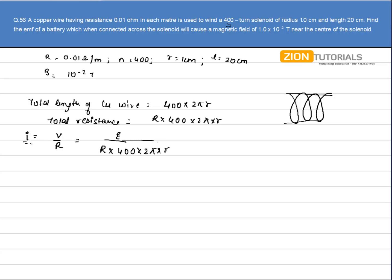This is the current flowing through the copper wires. We know that magnetic field for a solenoid at the center is given by mu naught N i. Substituting the values: 4 pi into 10 to the power minus 7, N is 400, current is E by R into 400 into 2 pi r, and that equals the magnetic field 10 to the power minus 2.